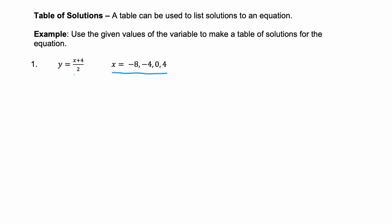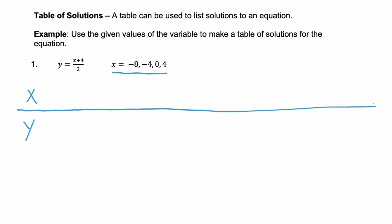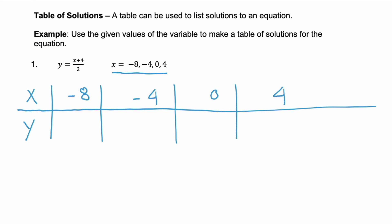Example 1 wants us to use given values of x to make a table of solutions for y equals (x + 4) / 2. First, let's make a table with columns for x and y. We're given four x values to use: negative 8, negative 4, 0, and 4. We plug each of those x values individually into the equation and solve for y.